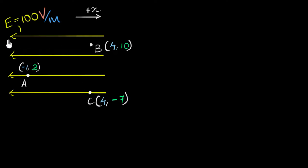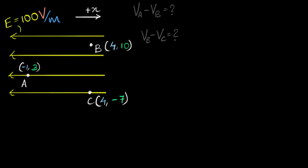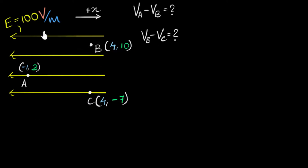We're given an electric field towards the left, a uniform field with a magnitude of 100 volts per meter. We're given three points, A, B, and C, and we're asked to figure out what is the potential difference VA minus VB and VB minus VC. The whole idea behind this problem is we need to find a way to calculate potential differences from electric fields.